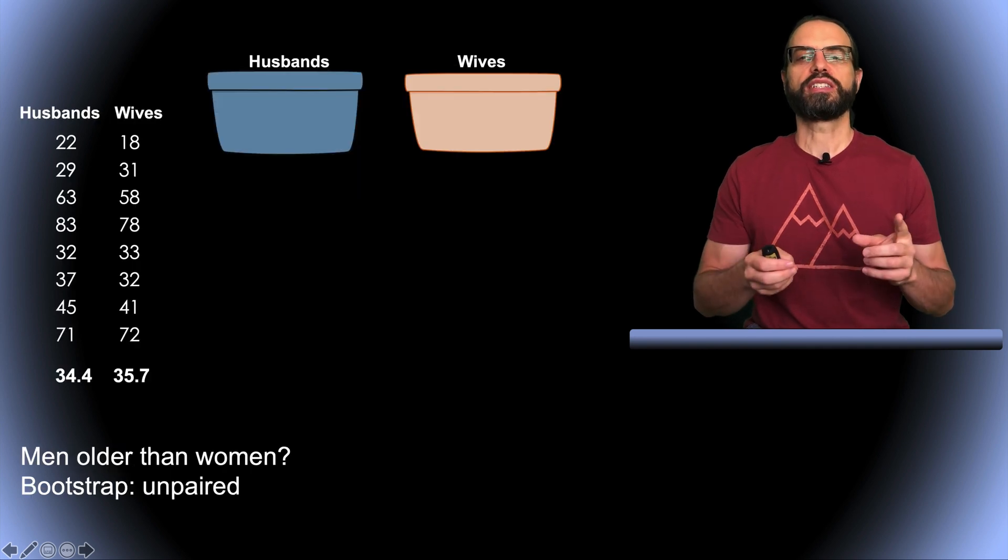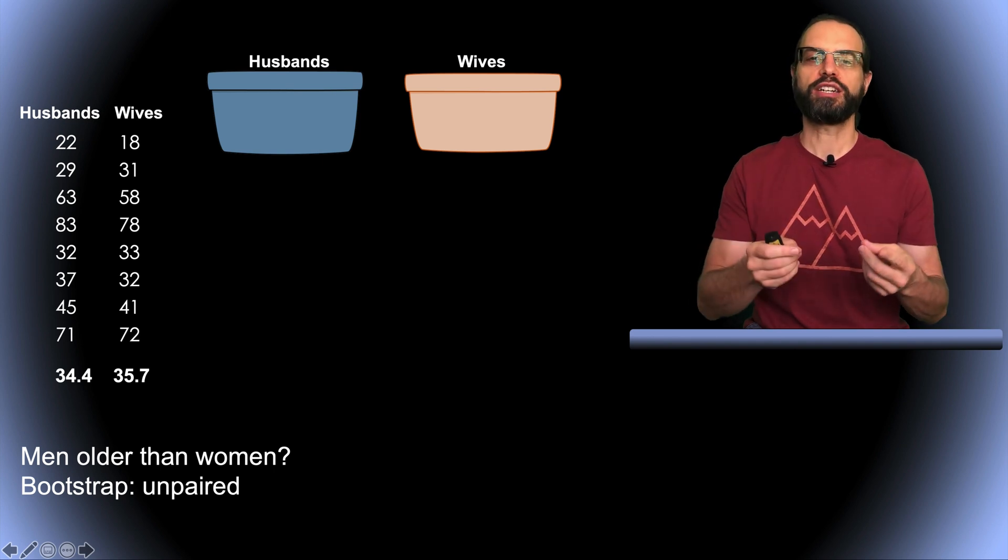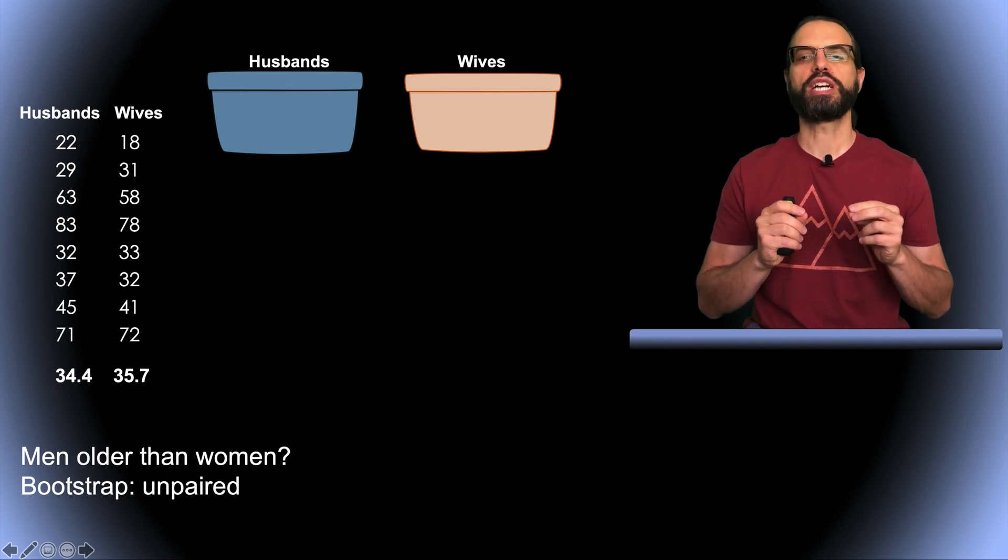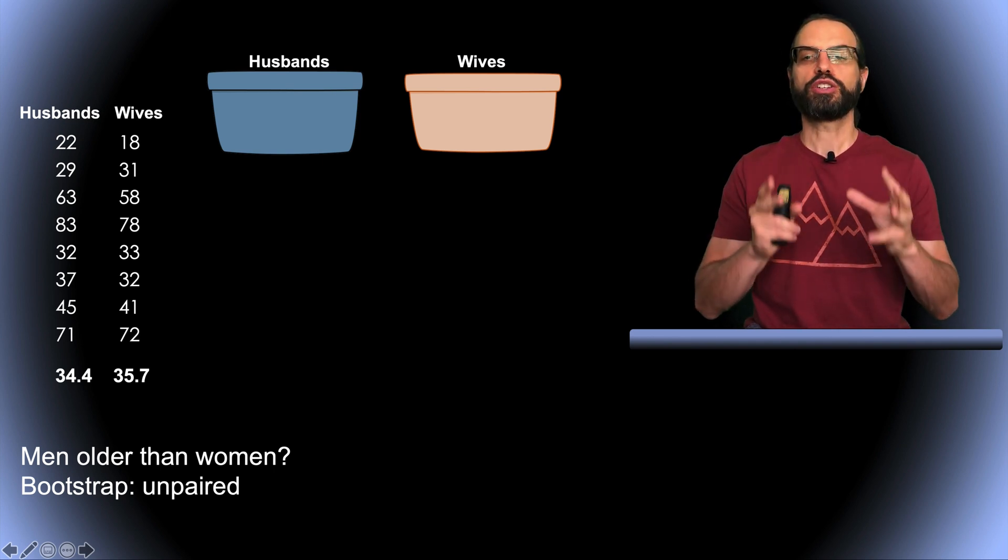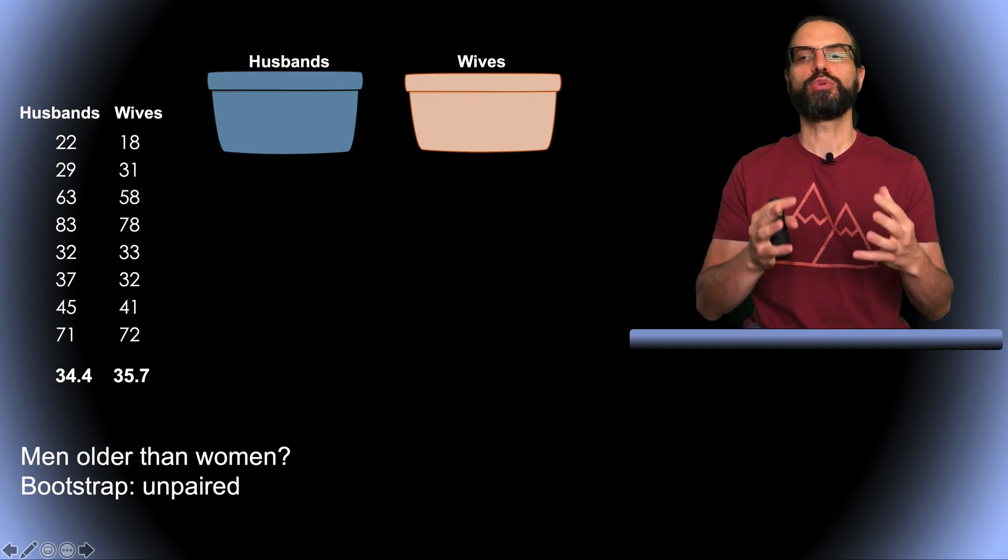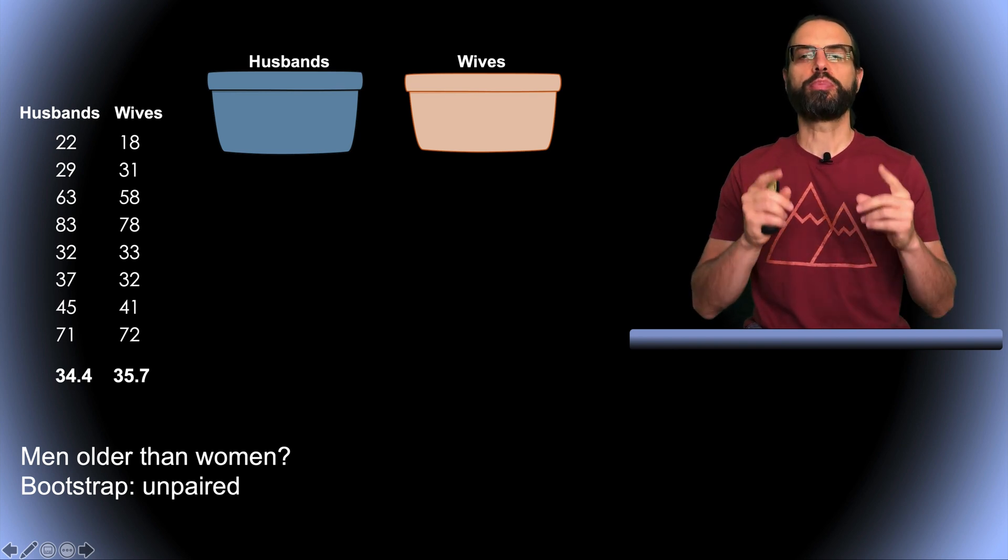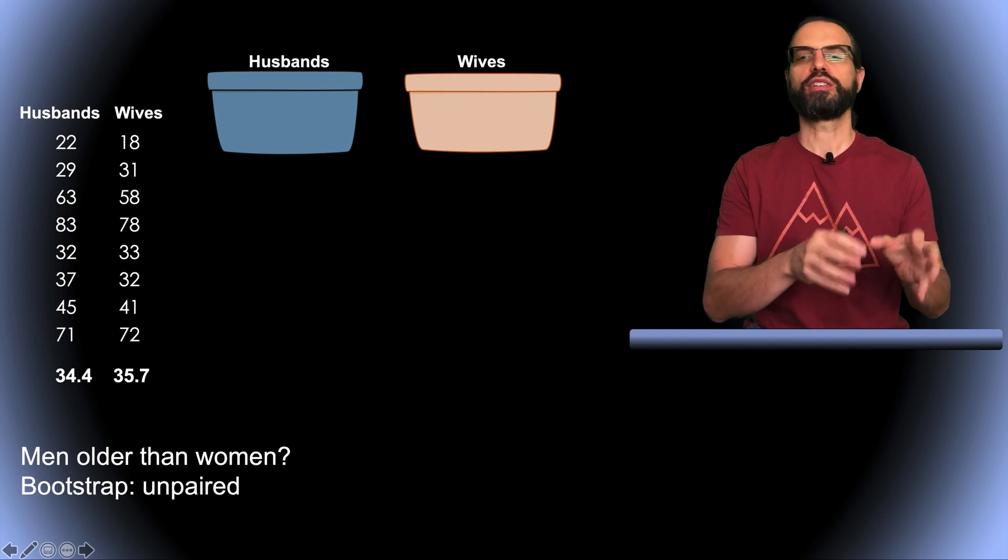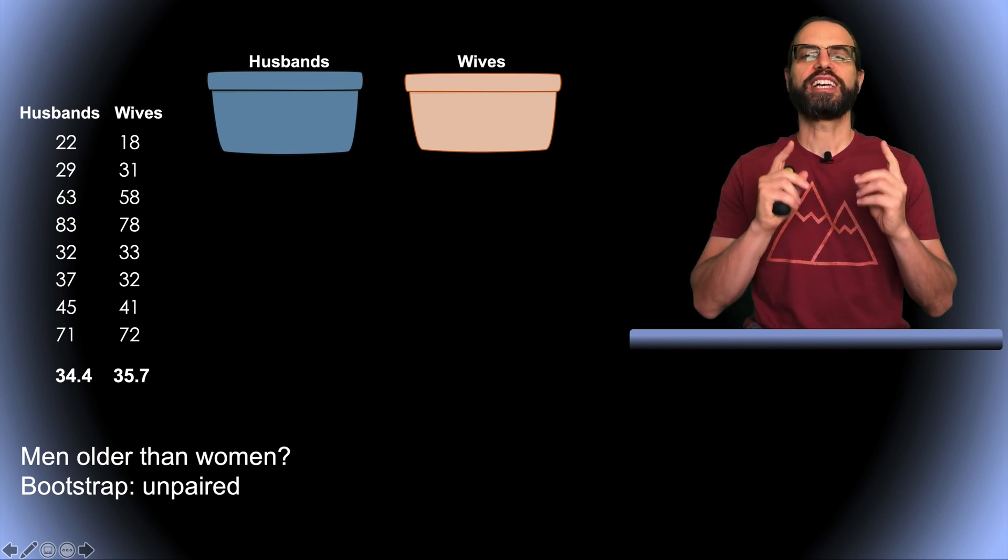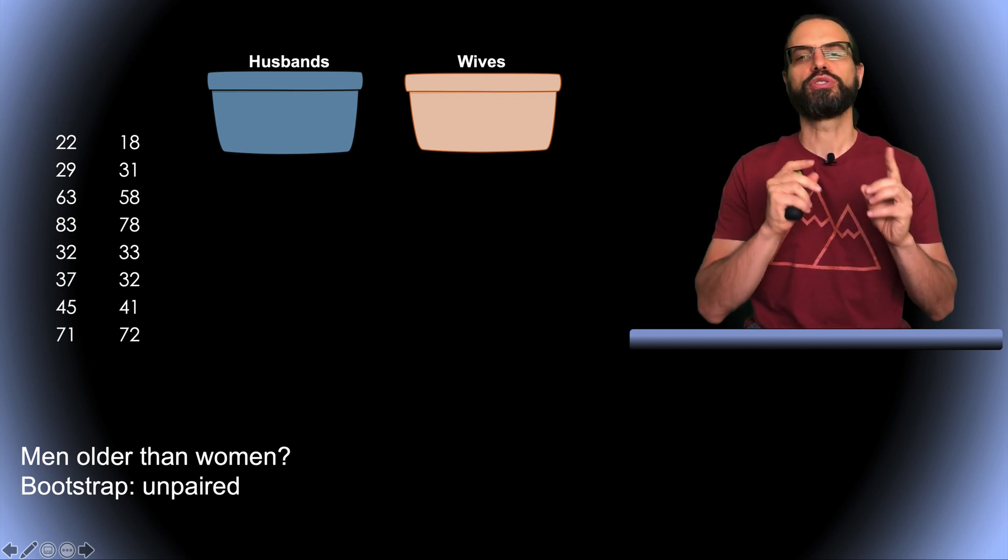What about unpaired statistics? The interesting thing with this example is that we can perform either paired or unpaired statistical comparison. We have done the paired comparison, so let's do the unpaired one. In this case, there is no pairing, so we just have a group of men and a group of women. We want to assess if the men as a group are older than women.